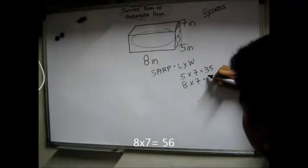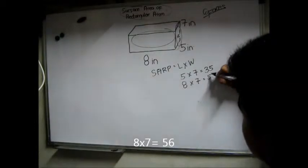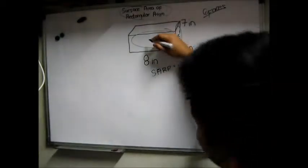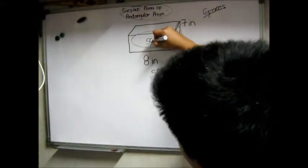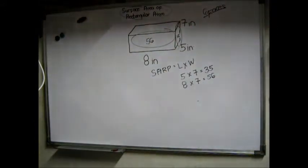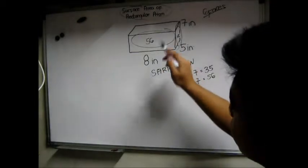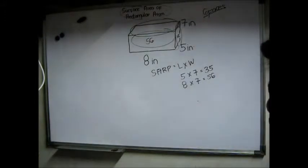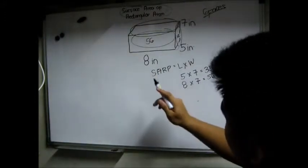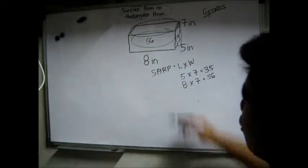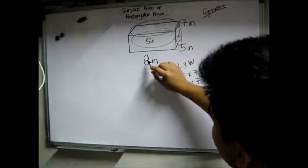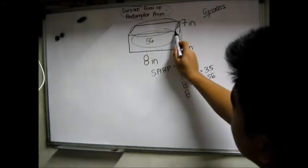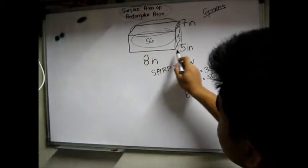So 8 multiplied by 7 is equal to 56. So this second face is 56. Now we're going to find the third face which is here. Now the length of this third face is 8 because this line is the length. They have the same size.